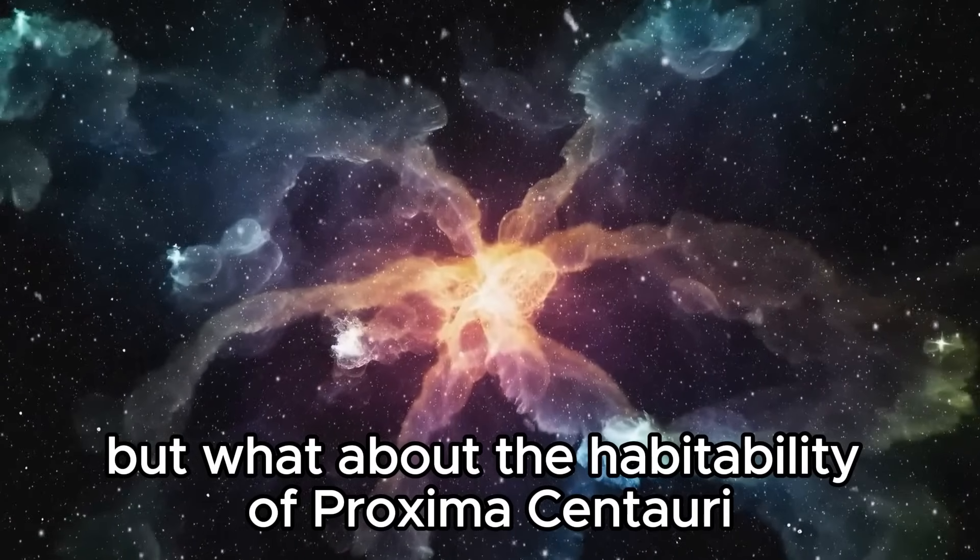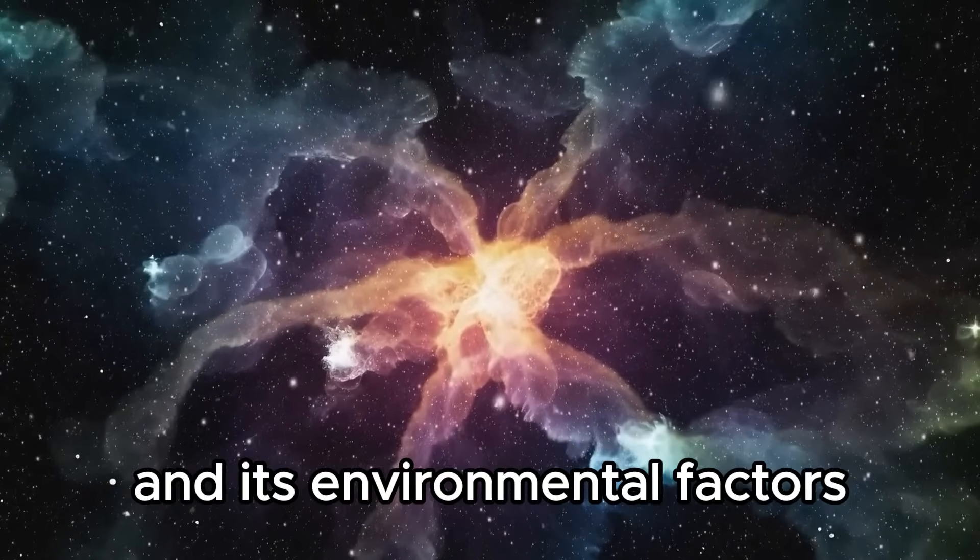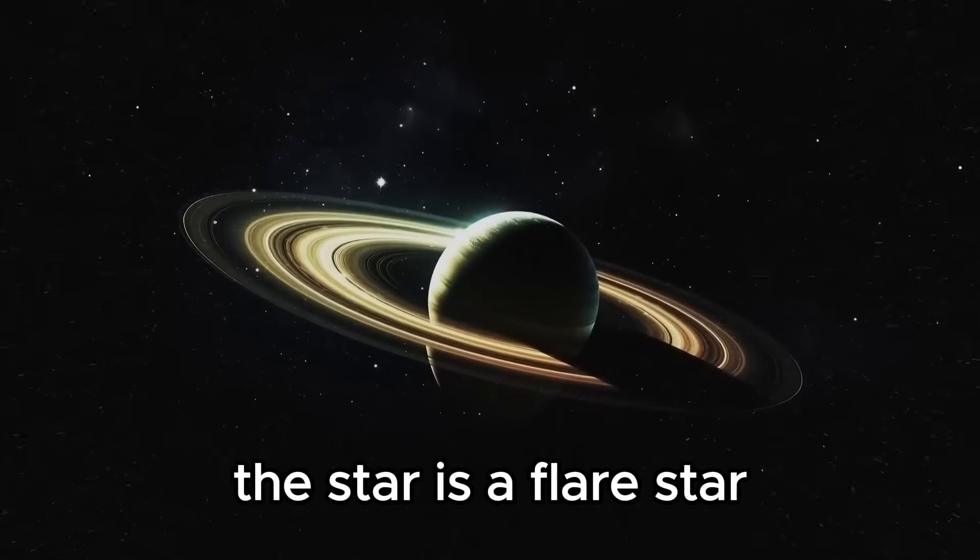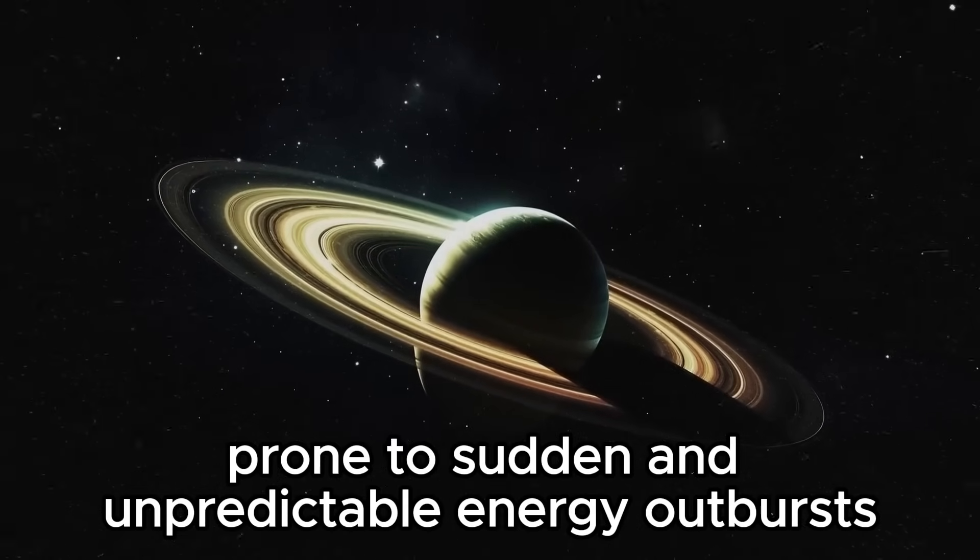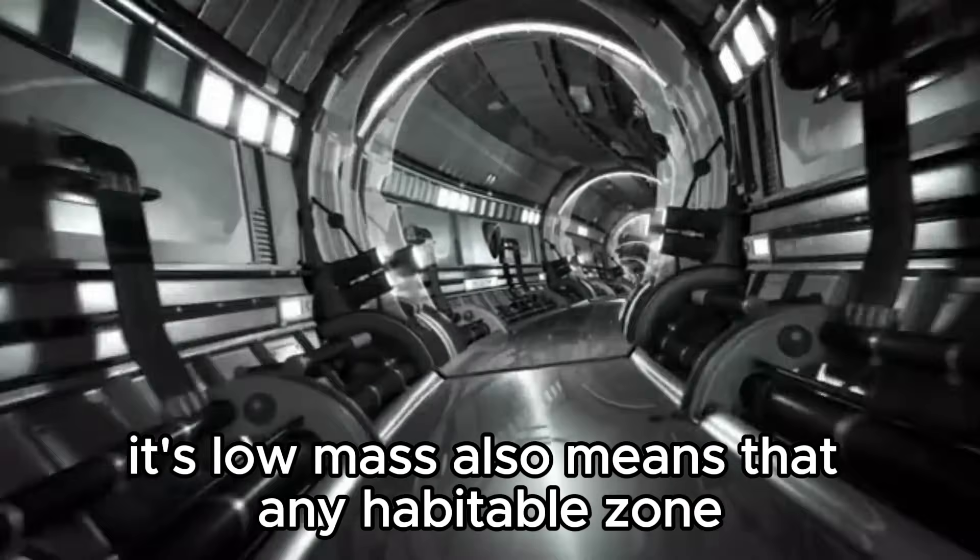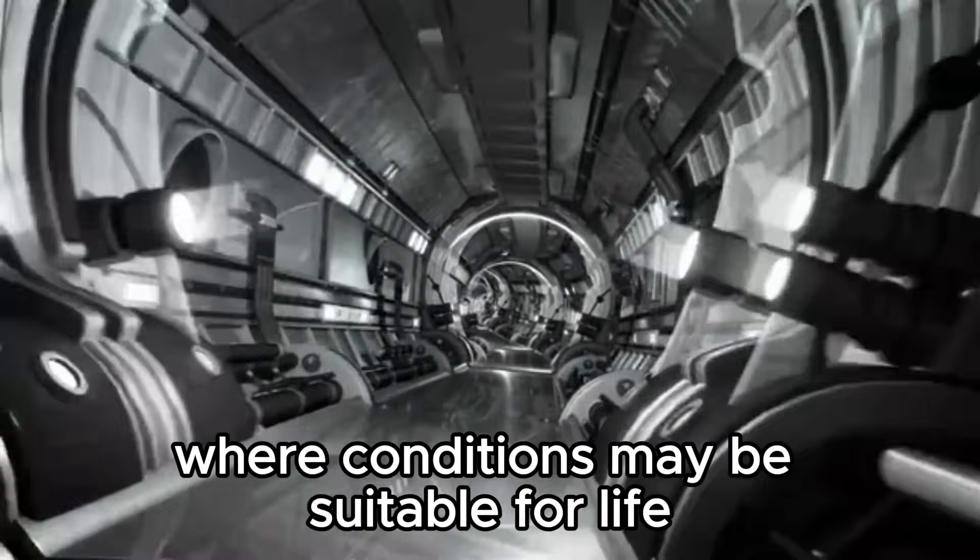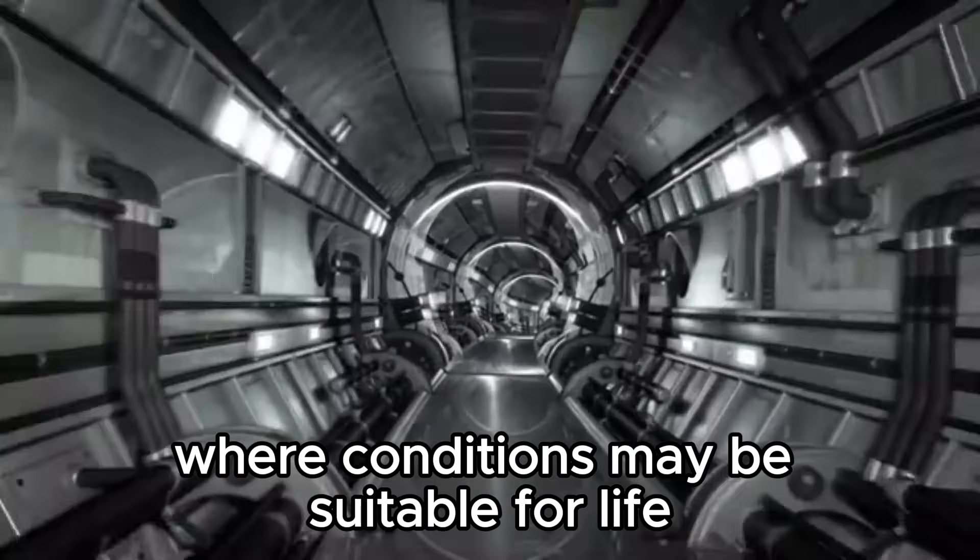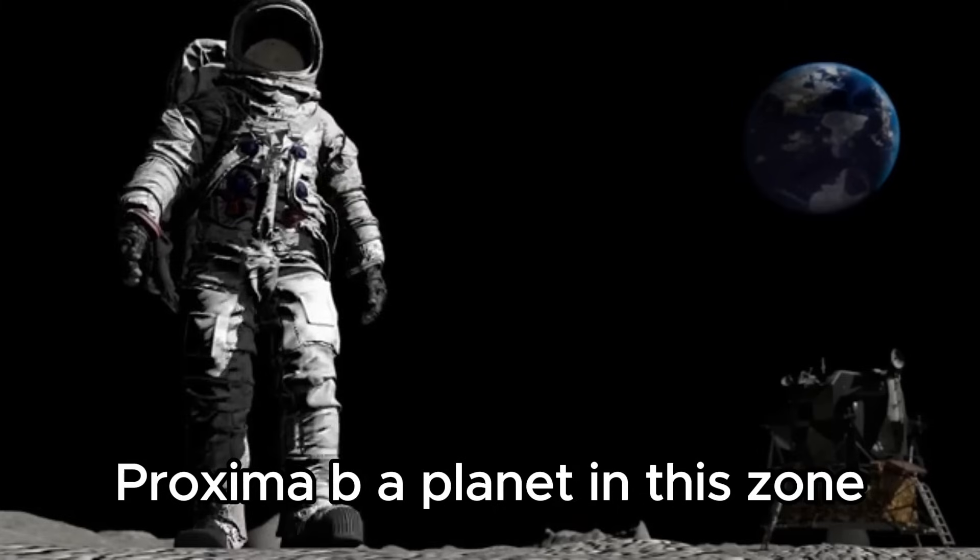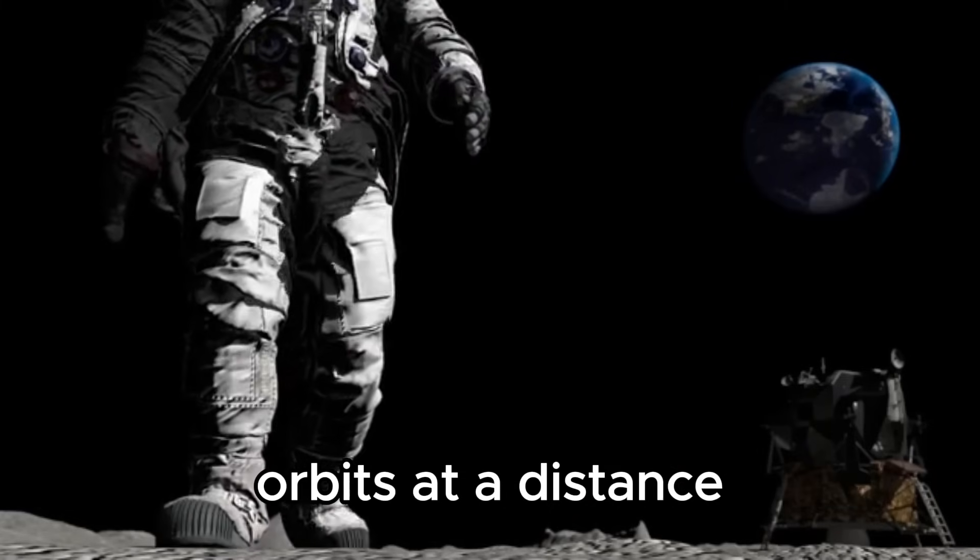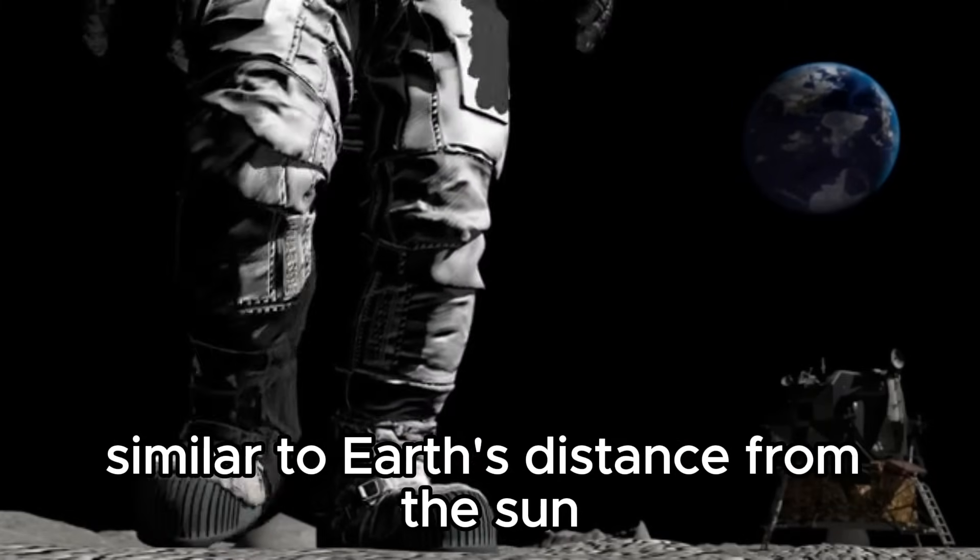But what about the habitability of Proxima Centauri and its environmental factors? The star is a flare star, prone to sudden and unpredictable energy outbursts. Its low mass also means that any habitable zone, where conditions may be suitable for life, is much closer in than our own sun's. Proxima b, a planet in this zone, orbits at a distance similar to Earth's distance from the sun.